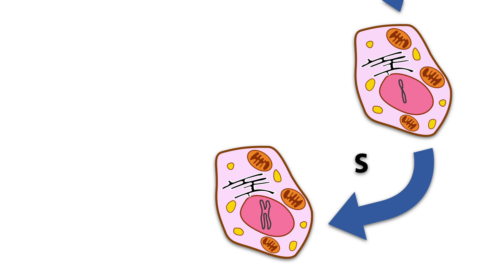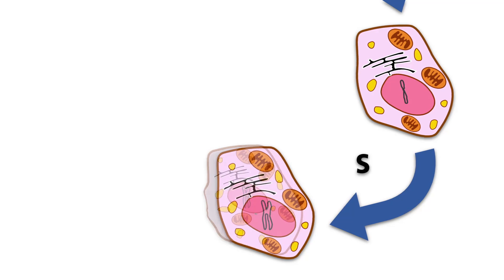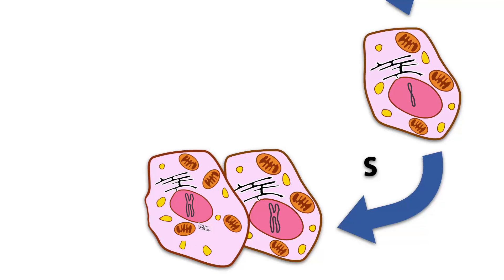The completion of replication marks the beginning of the second GAP phase, the G2 phase. During this phase, the cell prepares itself for the impending mitosis.